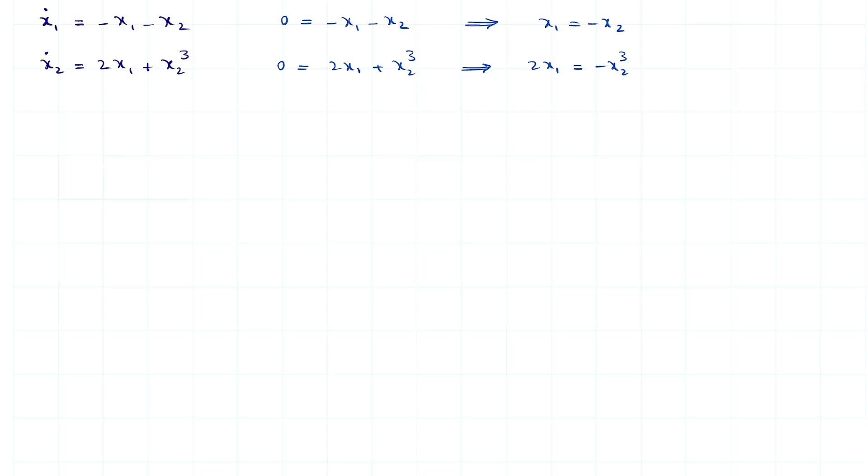We now need to substitute the value of x1 or x2 from this equation into this equation. So, we can write the second equation into this form: 2 times minus x2 equals minus x2 cubed. And then we move all terms to one side. Minus 2x2 plus x2 cubed equals 0. We then write it into this form: x2 times minus 2 plus x2 squared equals 0.